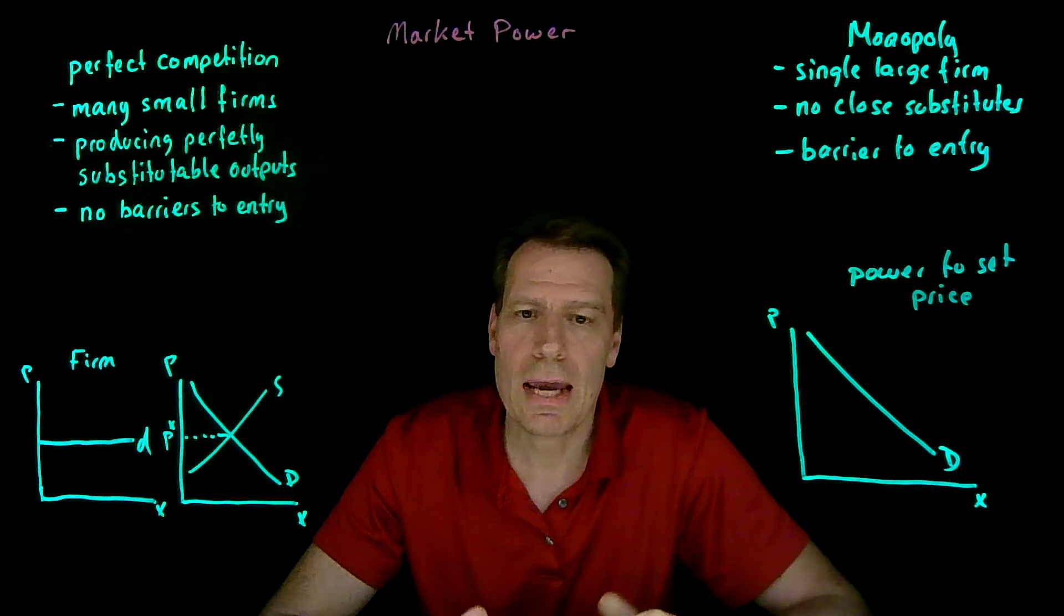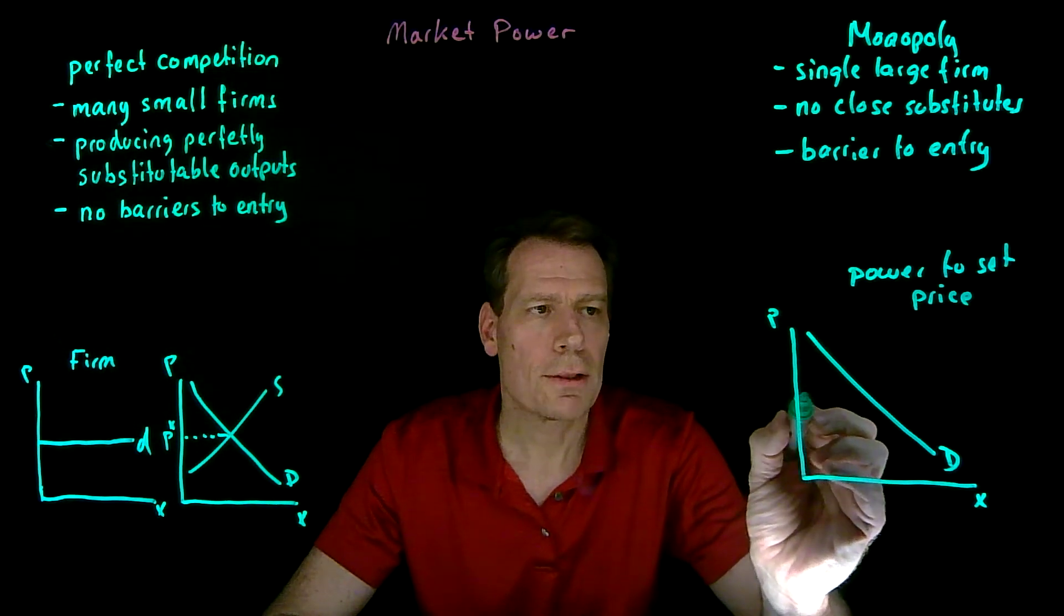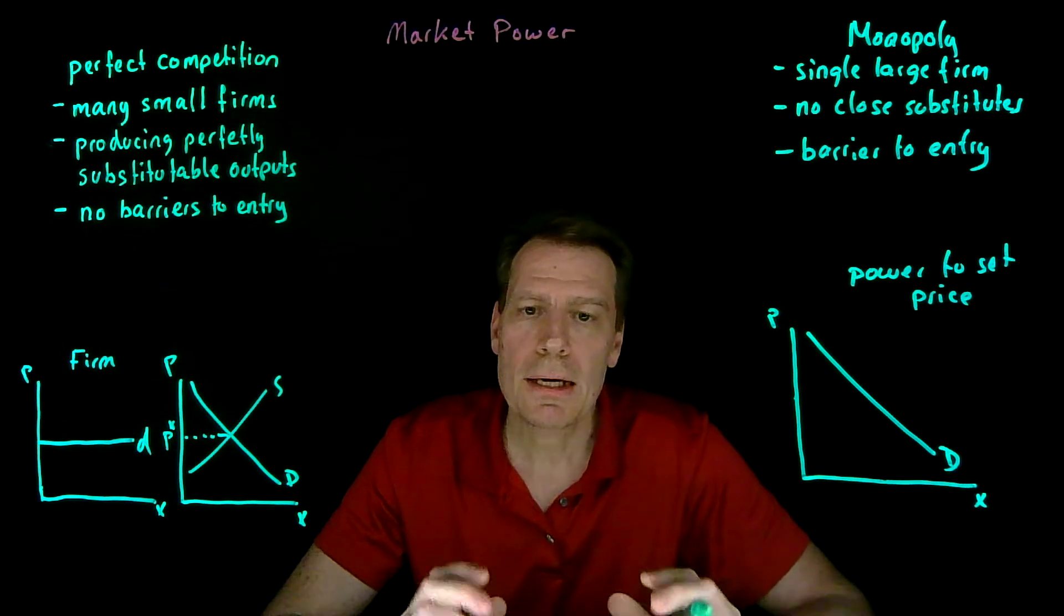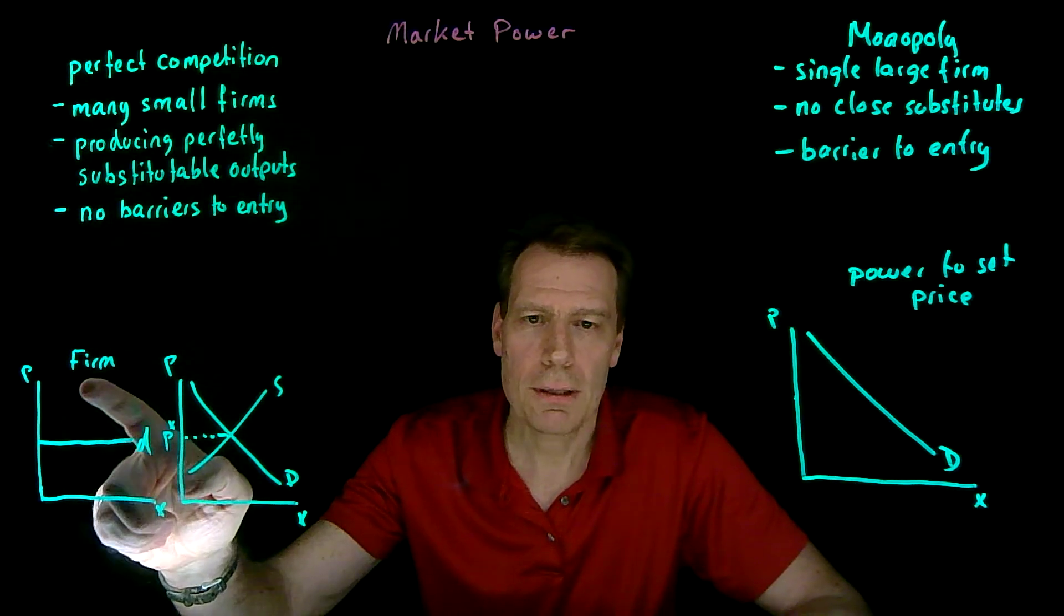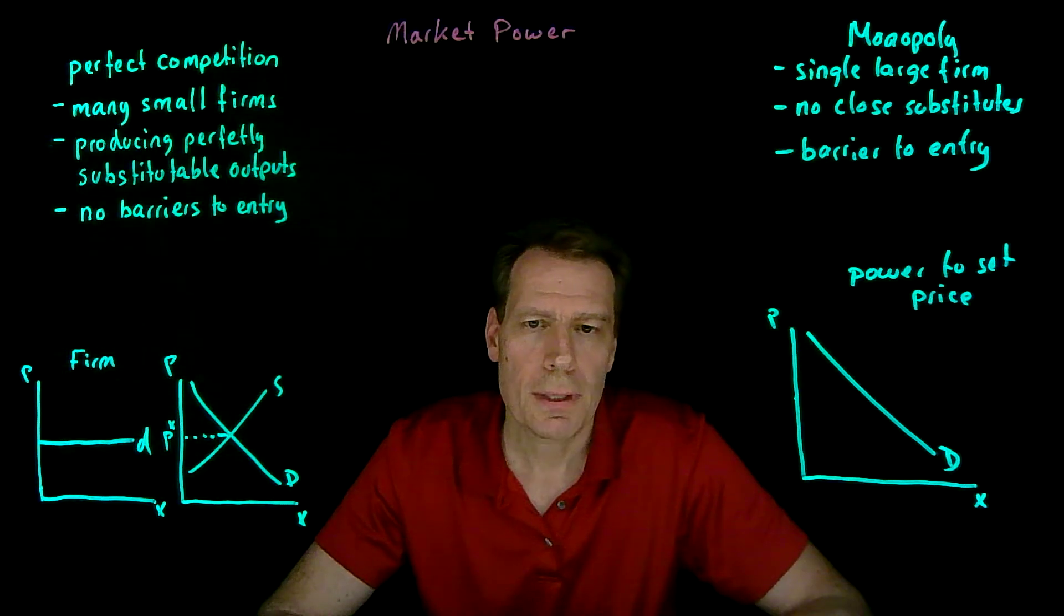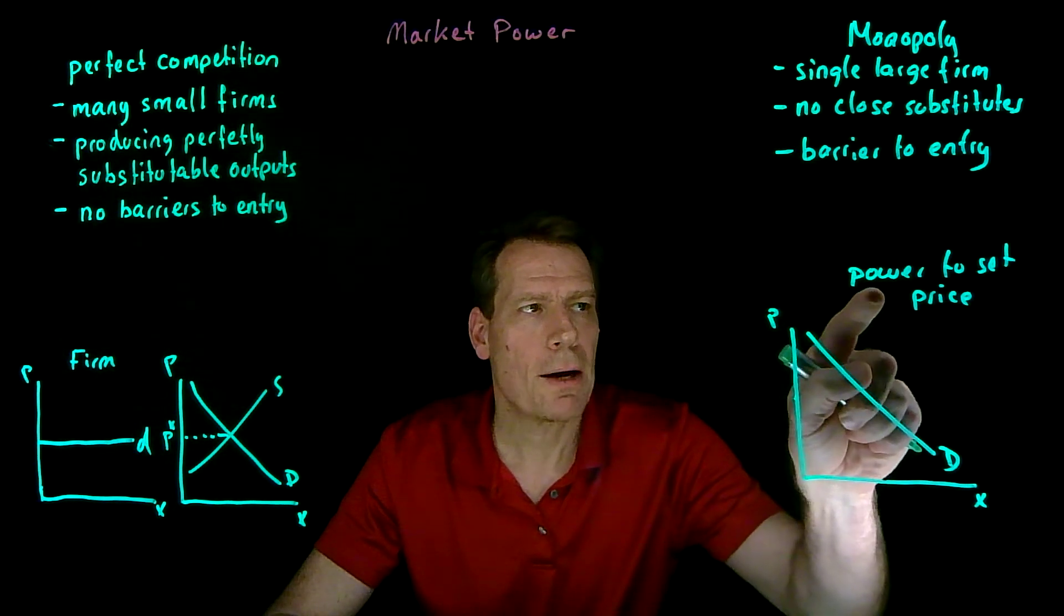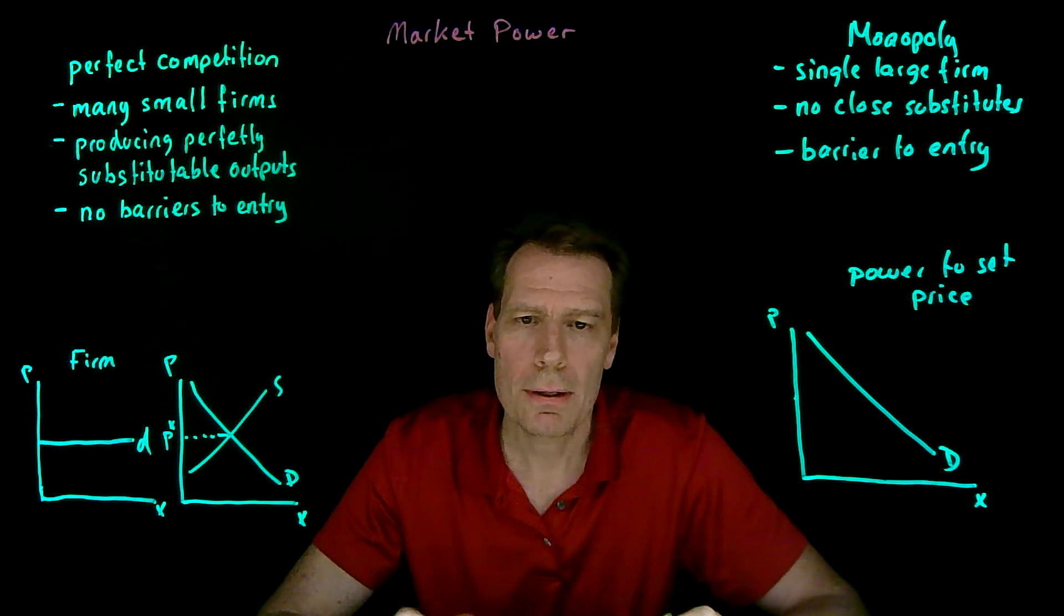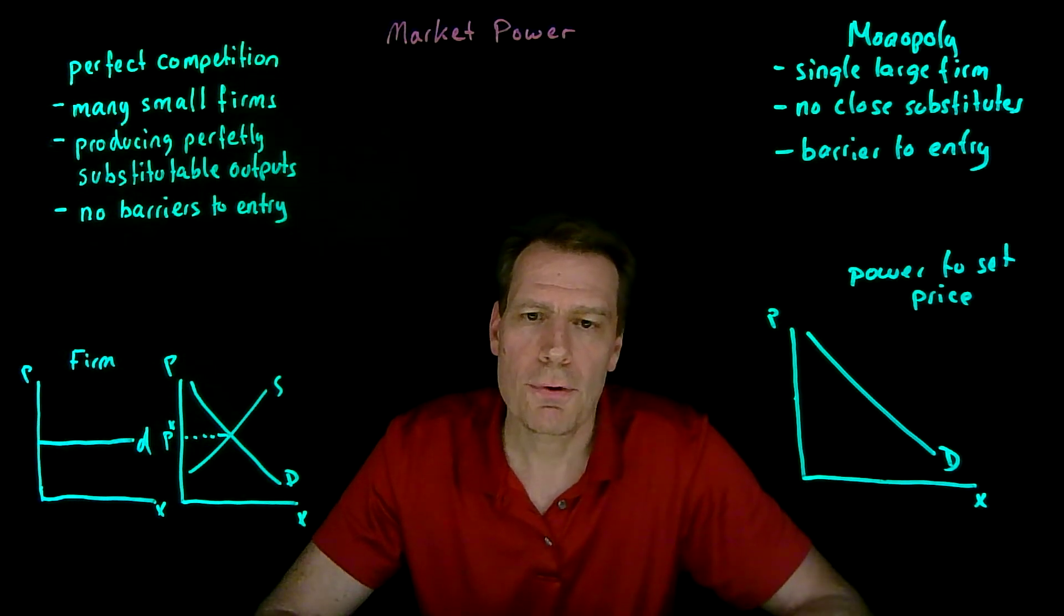It can't set just any price and quantity. For any price it sets, it can sell a certain amount of output. But it can choose its price in a way that competing firms in a perfectly competitive market could not. Market power is all about the ability to set price, and monopolies have that power because they face that downward sloping demand curve from the market.